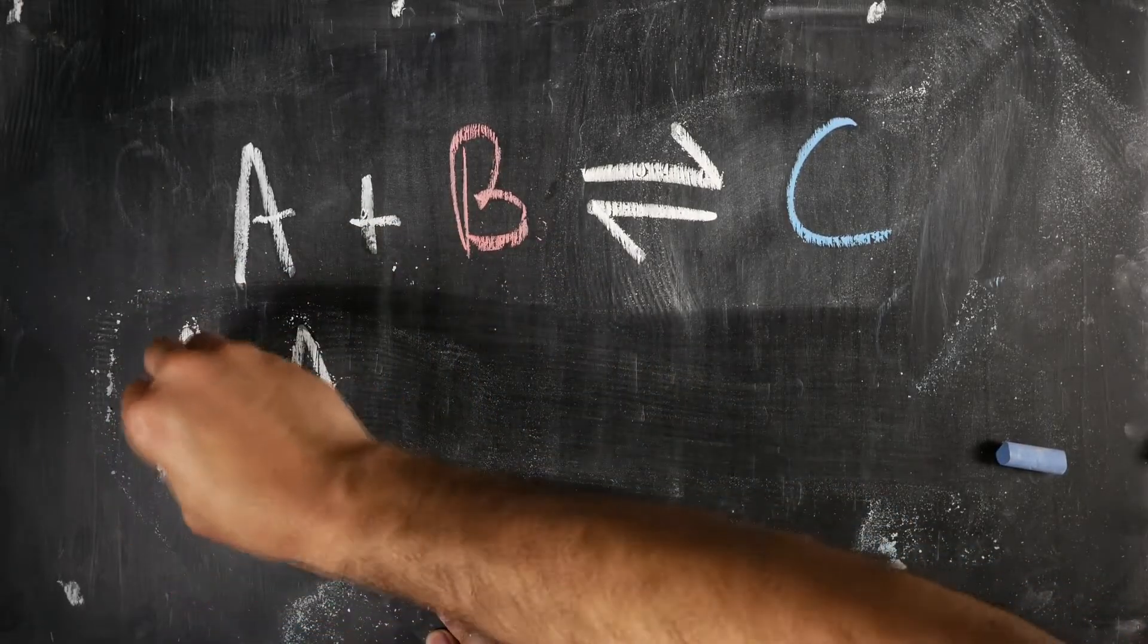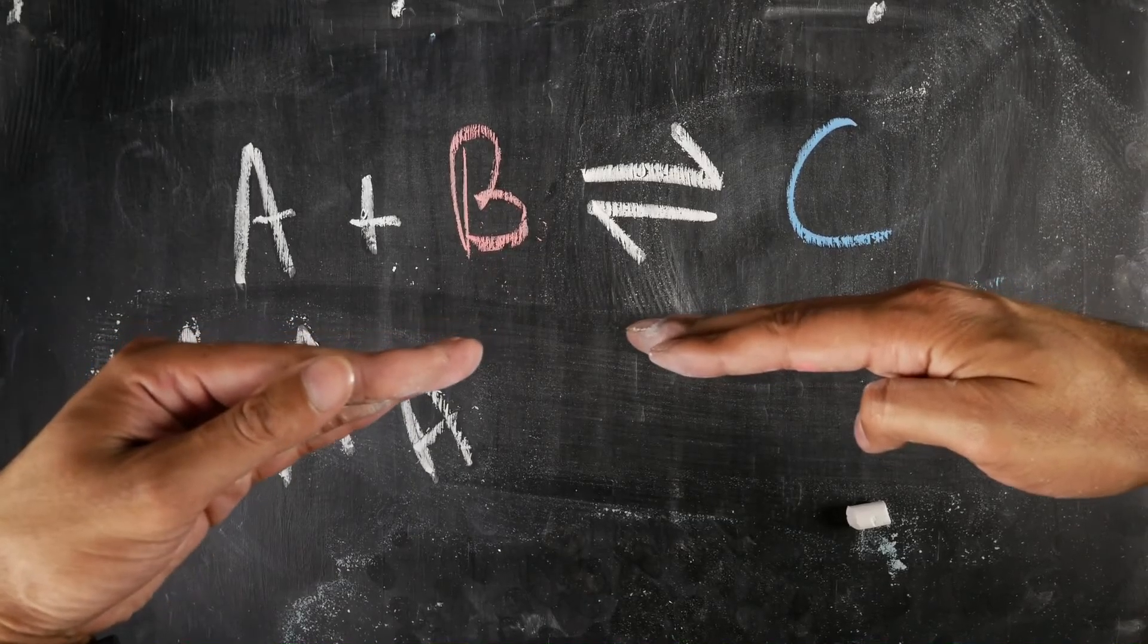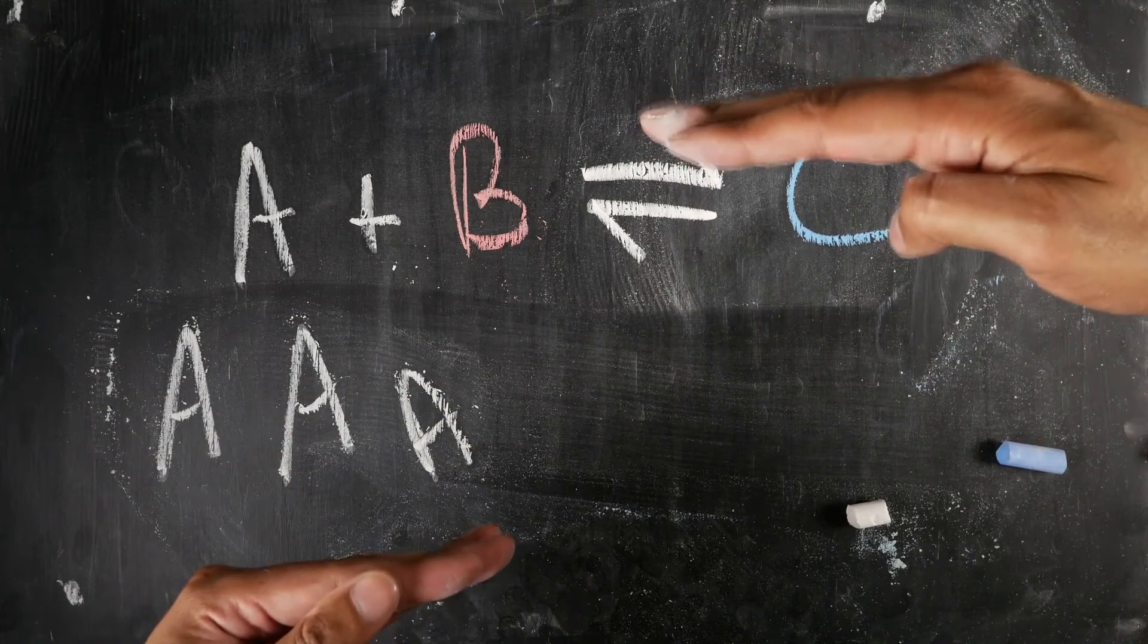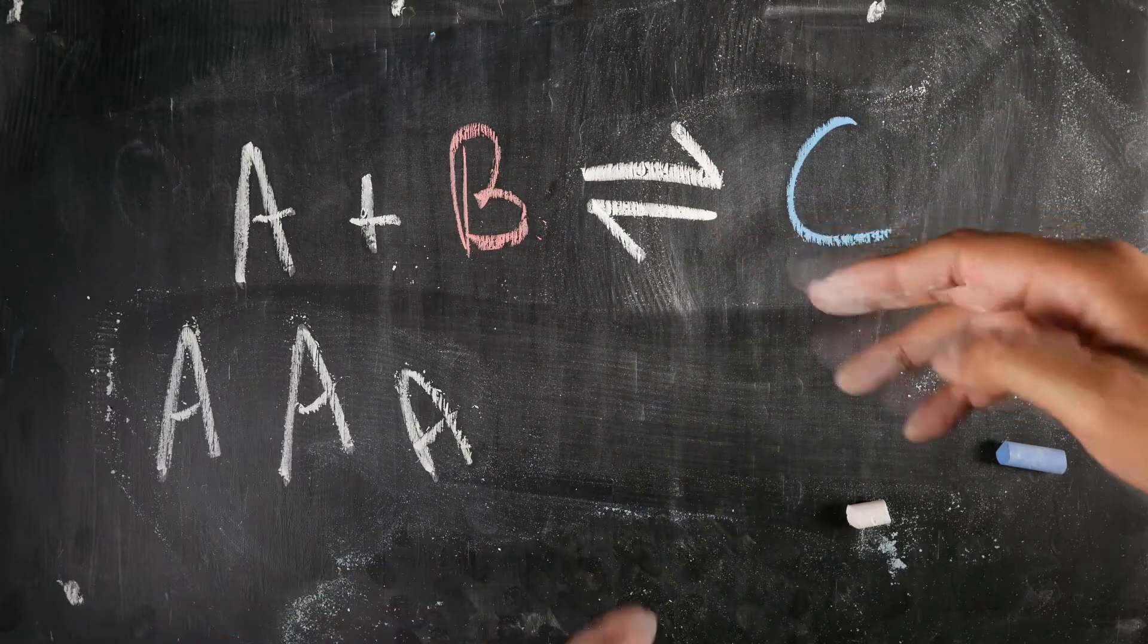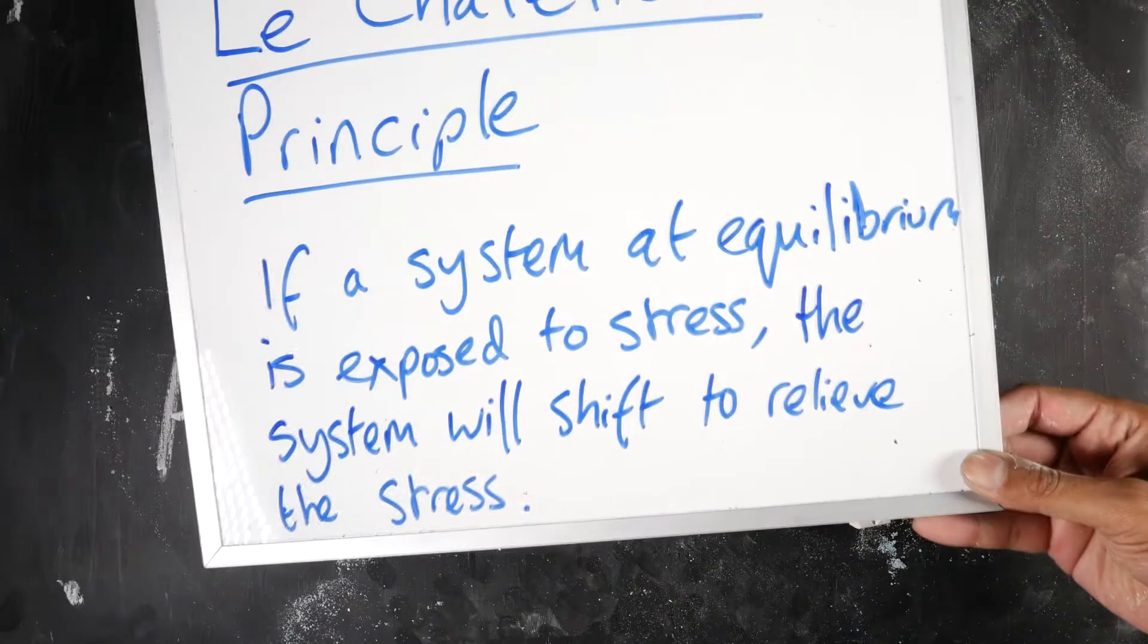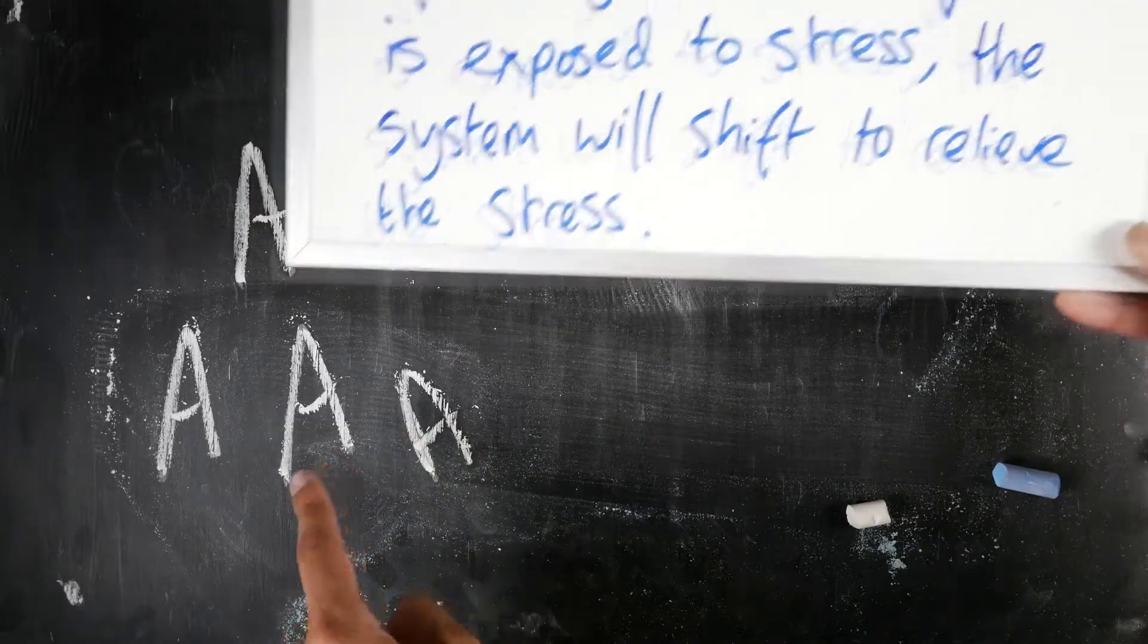So to put that onto the board, we can put lots and lots of A here. Now if you think about it, if it was a scale, it would be way down with the A down here. Now what then happens is according to this,